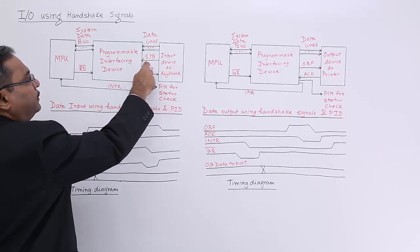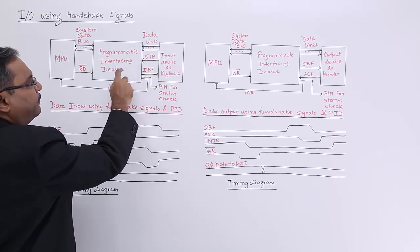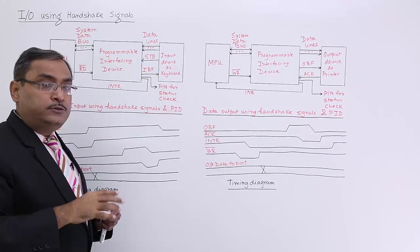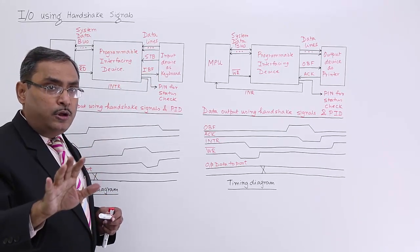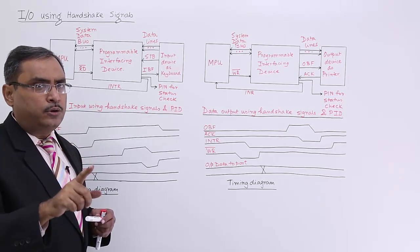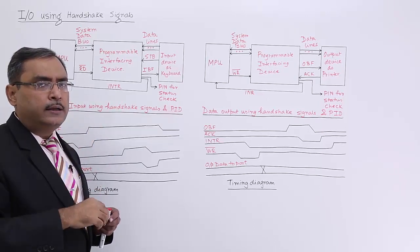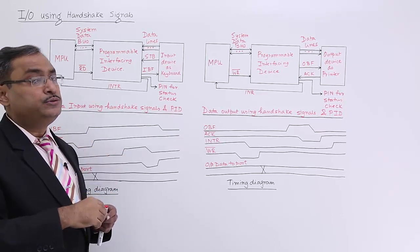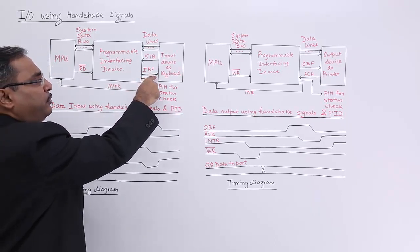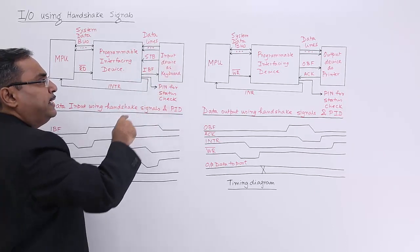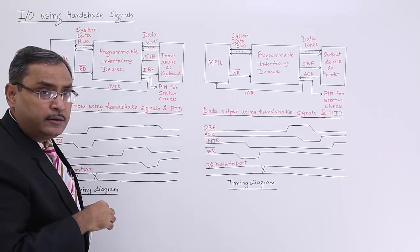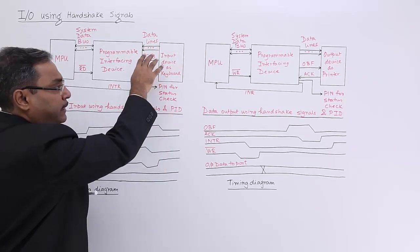After getting the strobe, the PID will enable the input buffer full line back to the input device. Input buffer full indicates: don't send the next scan code, because the previous scan code has not yet been processed. If you send the next scan code it will override the unprocessed scan code. So input buffer full is that control line. When input buffer full comes, the input device understands that the byte sent has been recognized, so it makes the strobe line disabled.